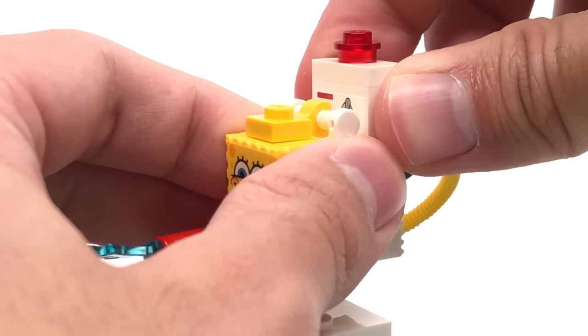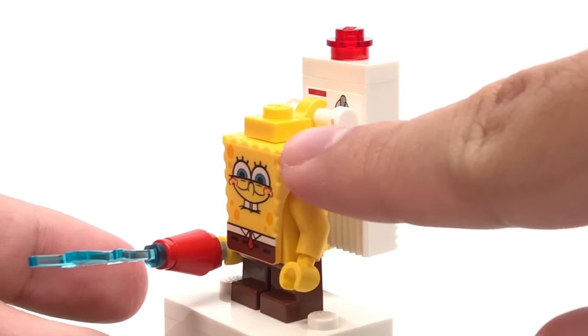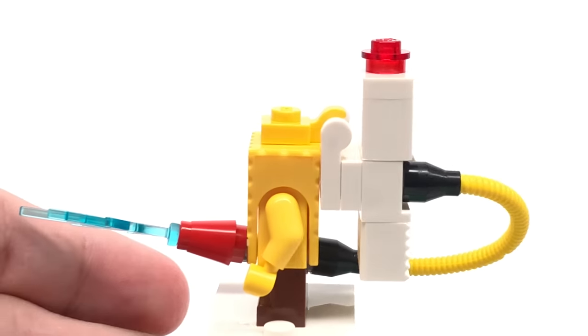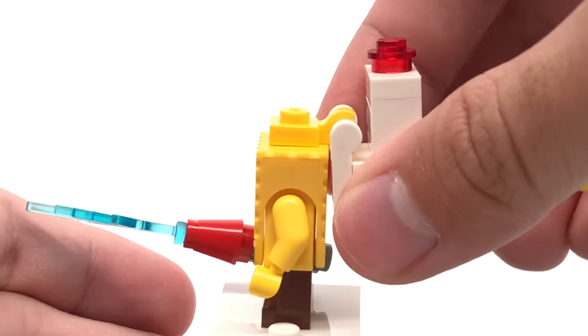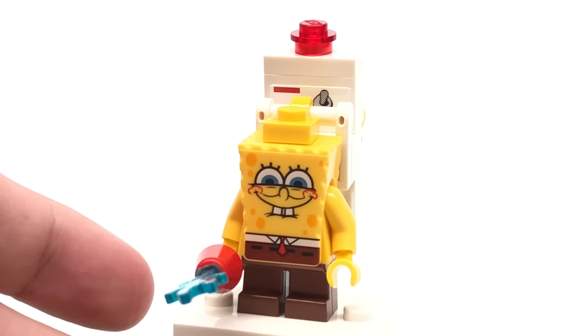And it just attaches to Spongebob via not only the hose that he's holding, but also this 1x1 clipped plate. And that's just a clever build in general, so you can even adjust that as you'd like, though this hose will probably pop off. But yeah, nice little build for Spongebob Squarepants.